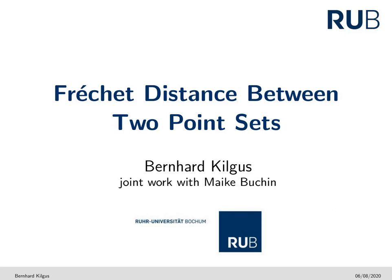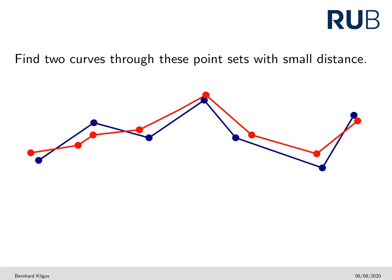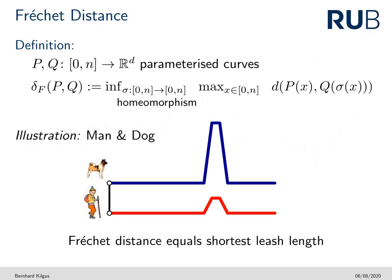Welcome everyone to this short video presentation introducing a new distance measure for two point sets in the plane, based on the Fréchet distance between two polygonal curves. Given two point sets, we ask if there are two curves through the point sets with small Fréchet distance. Intuitively, two point sets have a small distance under this measure if there are linear formations of the point sets such that these formations have a similar shape. Before introducing the formal definition and algorithmic approaches, I would like to recall the definition of the Fréchet distance between two polygonal curves.